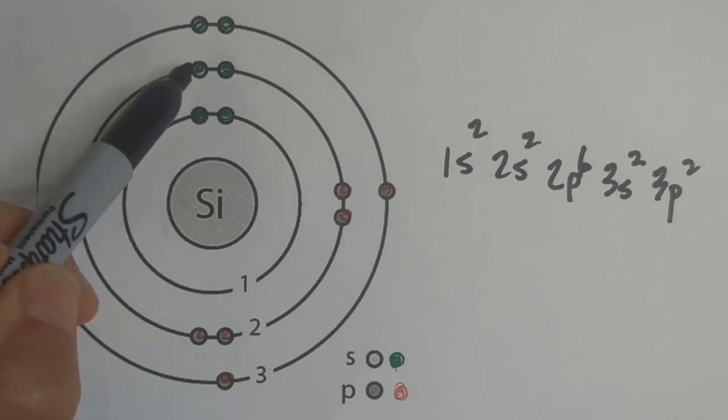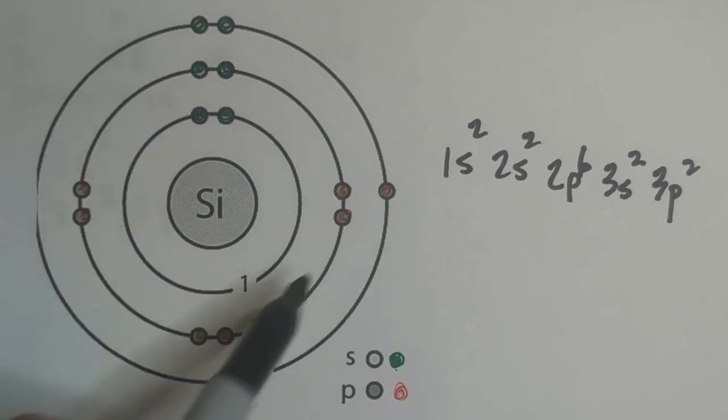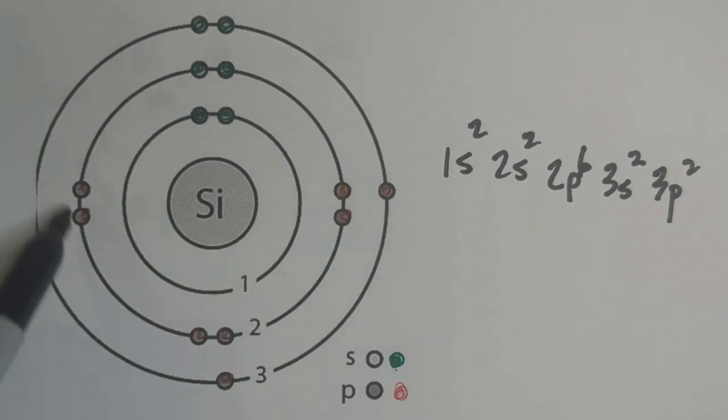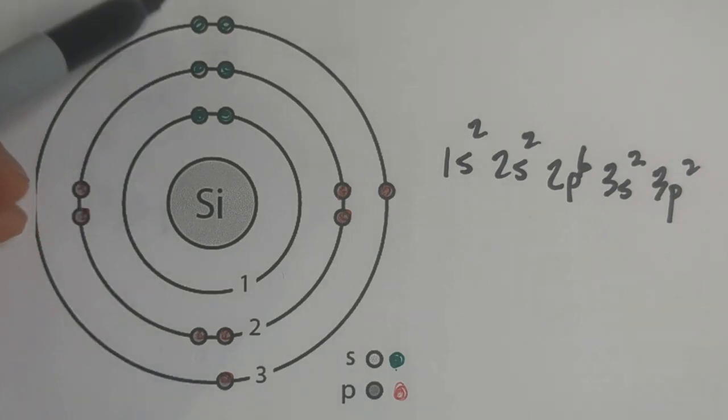Then in energy level 2, we have 2 s's and we have six of the p orbitals. And then in the last group, we have the 2s²s.